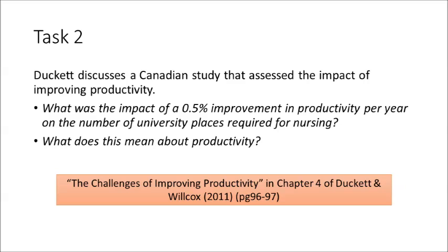So for Task 2, I'd like you to read the challenges of improving productivity in Chapter 4 of Duckett and Wilcox, and have a think about this. Firstly, Duckett discusses a Canadian study that assessed the impact of improving productivity. What was the impact of a 0.5% improvement in productivity per year, compared to actually no improvement, on the number of university places required for nursing? And what does this mean about productivity? Answer that question, and this will almost bring us to the end of Part 2.